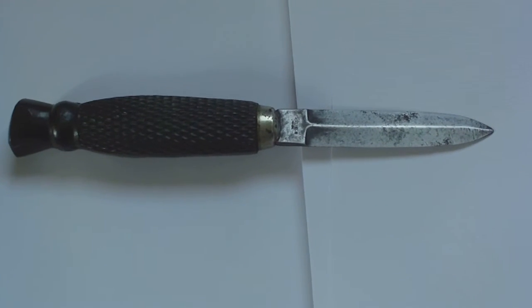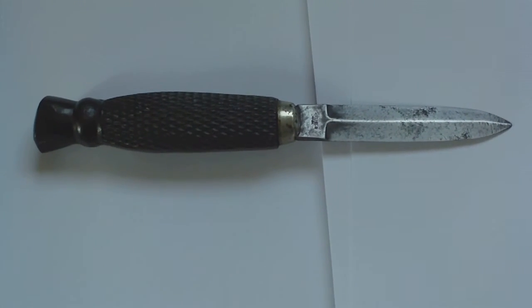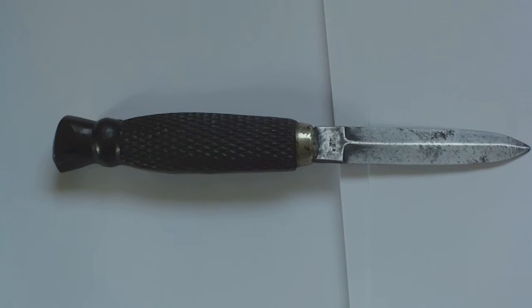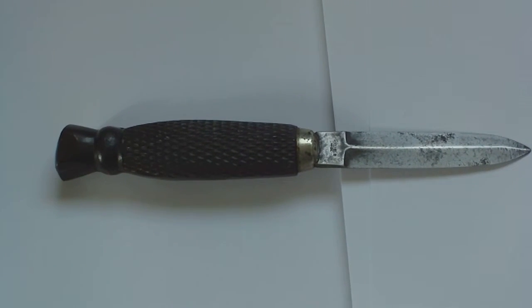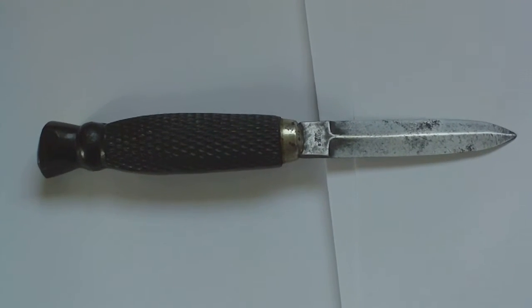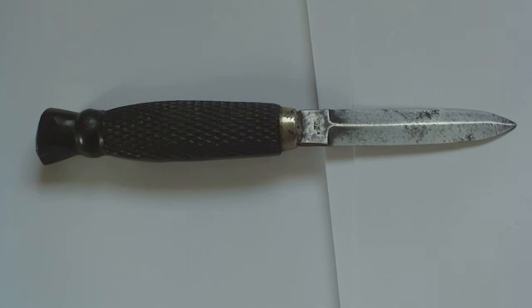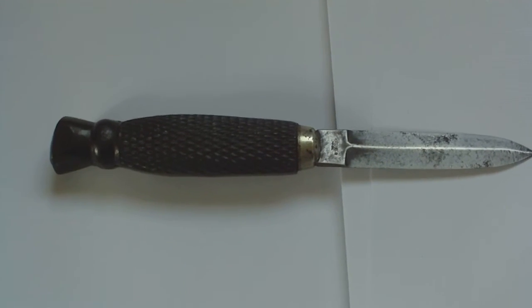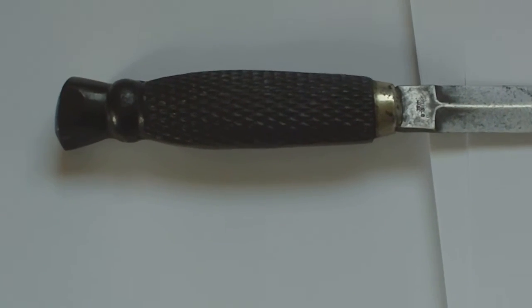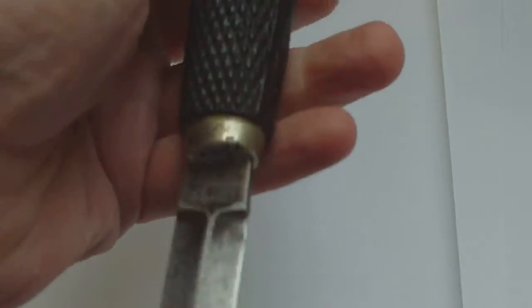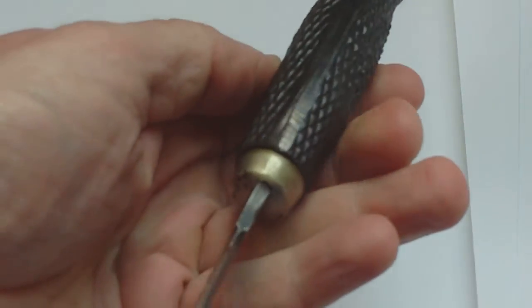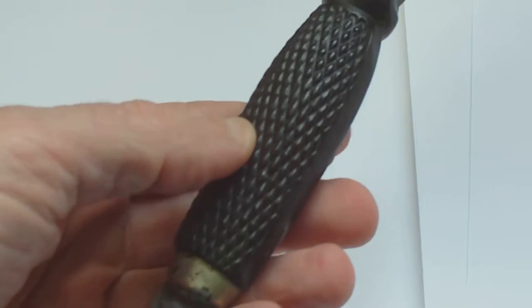This is a recognized pattern of First World War British officer private purchase trench dagger. The blades can be different to this one, but in all respects what makes it what it is is this hand grip, which is a plastic construction.